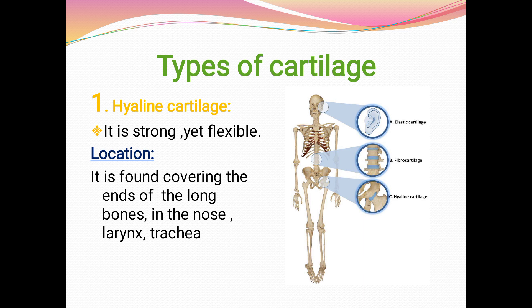Hyaline cartilage is a stronger yet flexible type of cartilage. Talking about its location, it is found covering the ends of long bones, in the nose, larynx, trachea, and bronchi tubes.